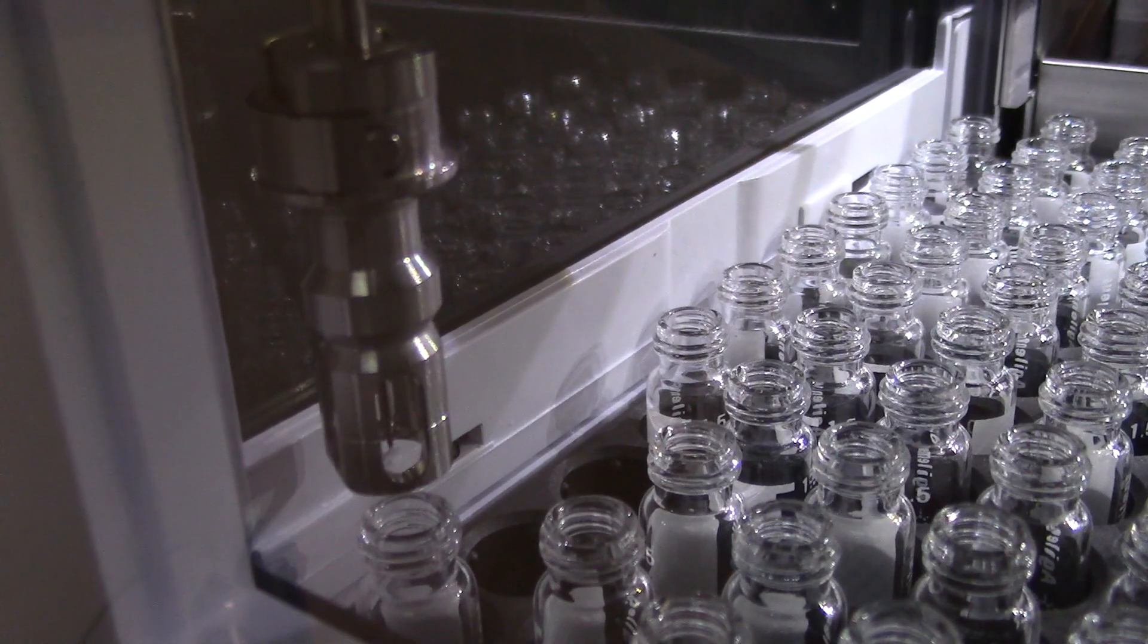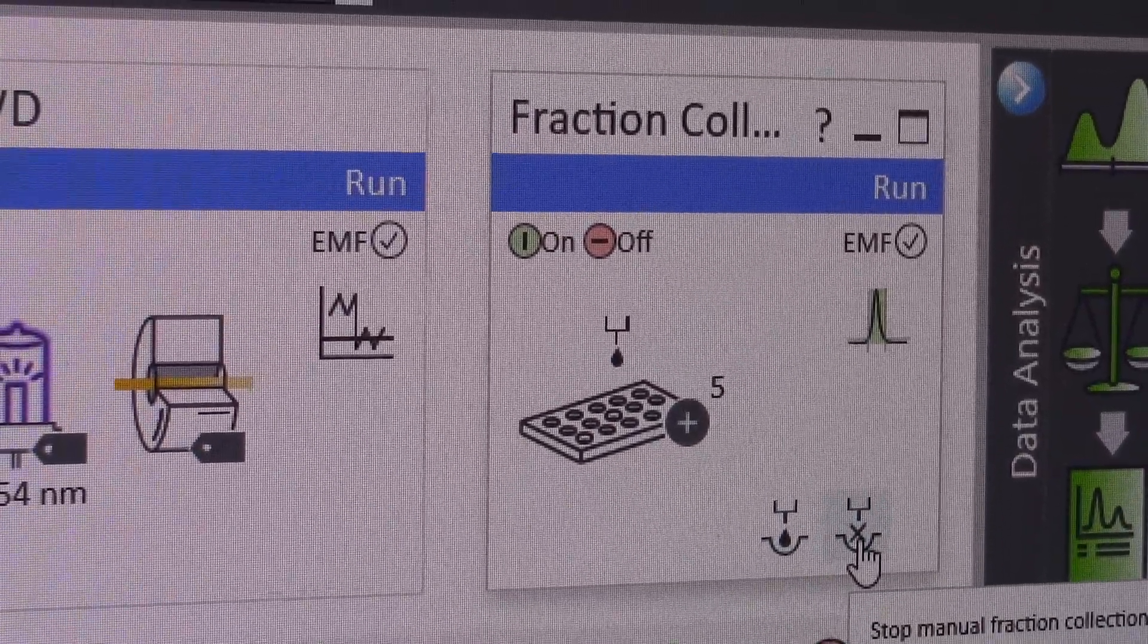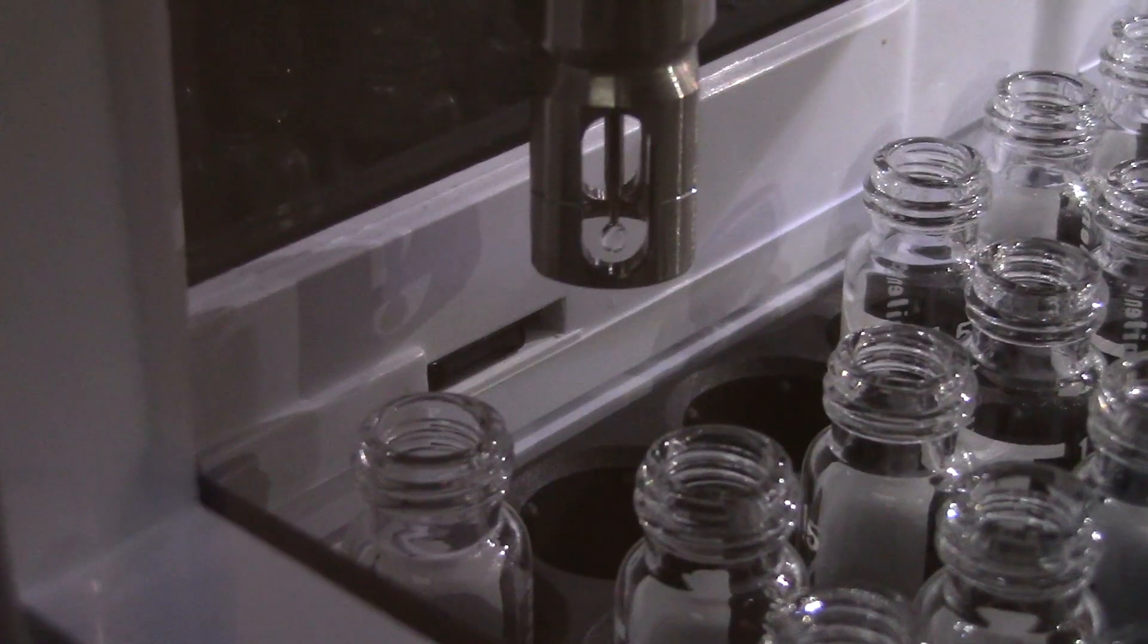Click collect fraction and it will start. Once you're done, just click stop collect fraction. Make sure you have a vial in the spot you're using because you don't want your sample to go to waste.